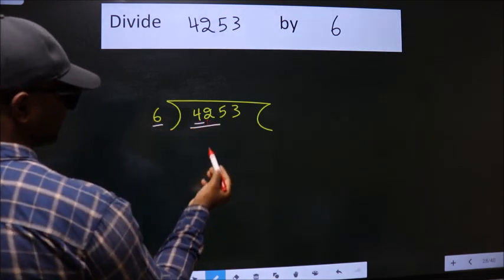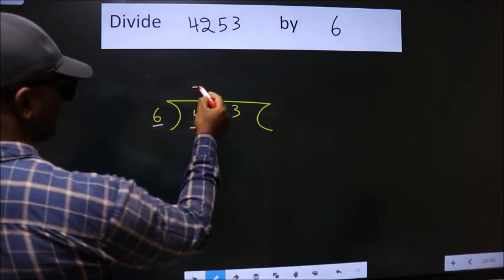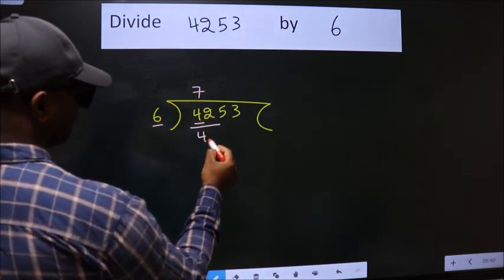So we should take two numbers: 42. When do we get 42 in the 6 table? Six sevens is 42.